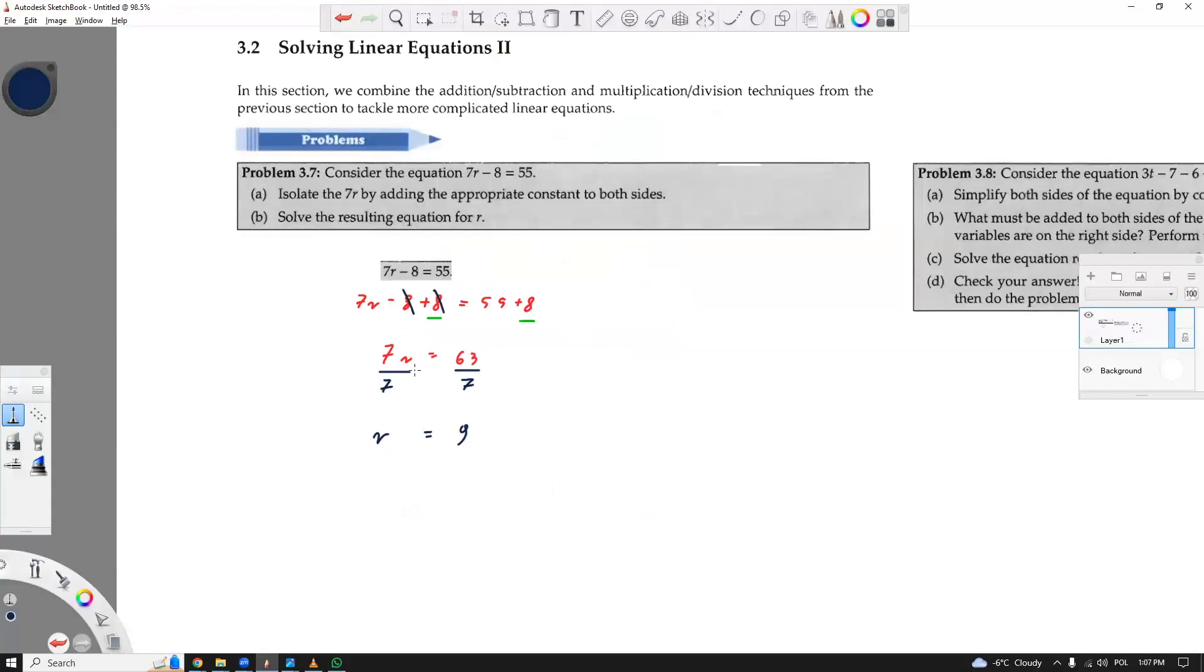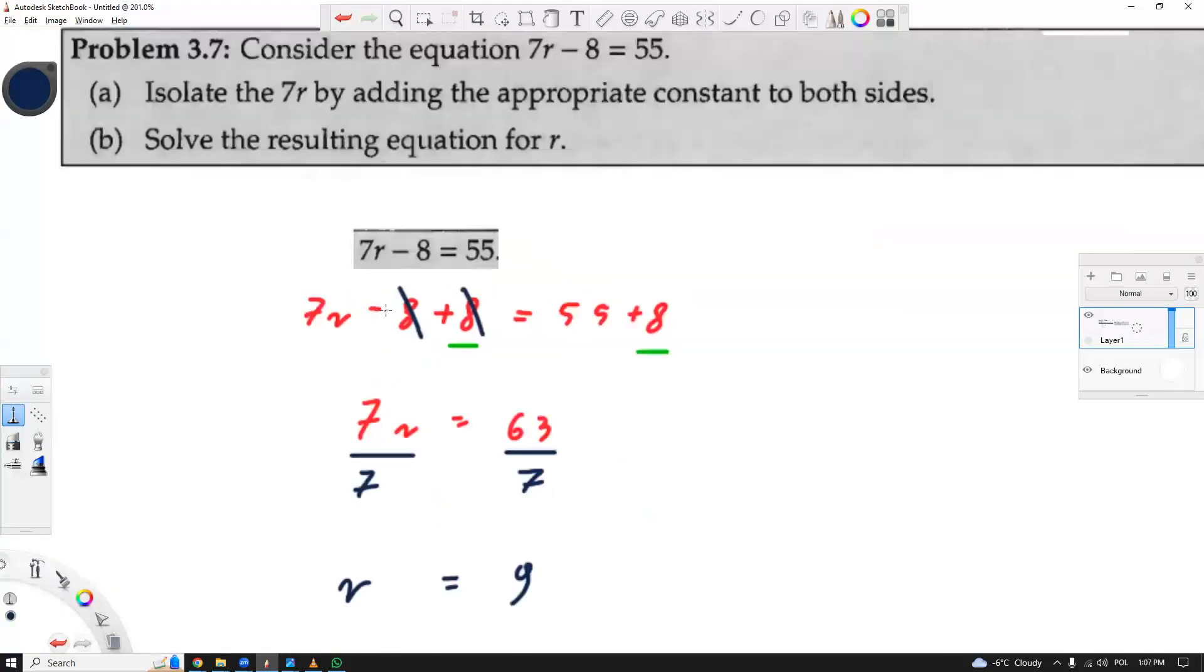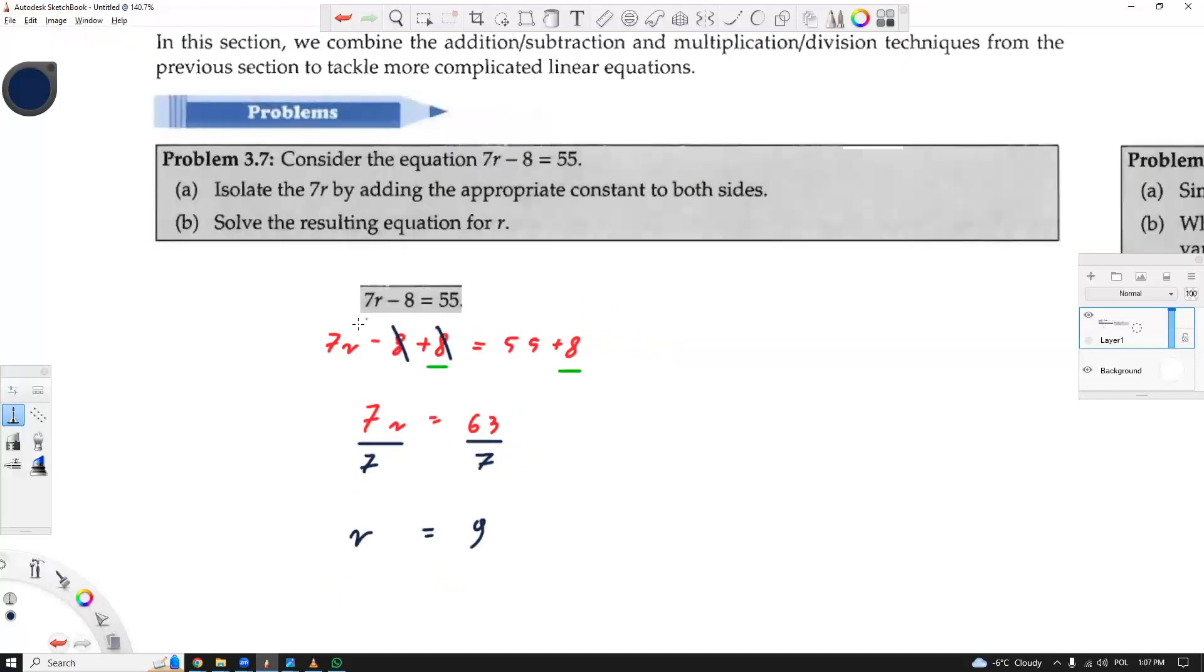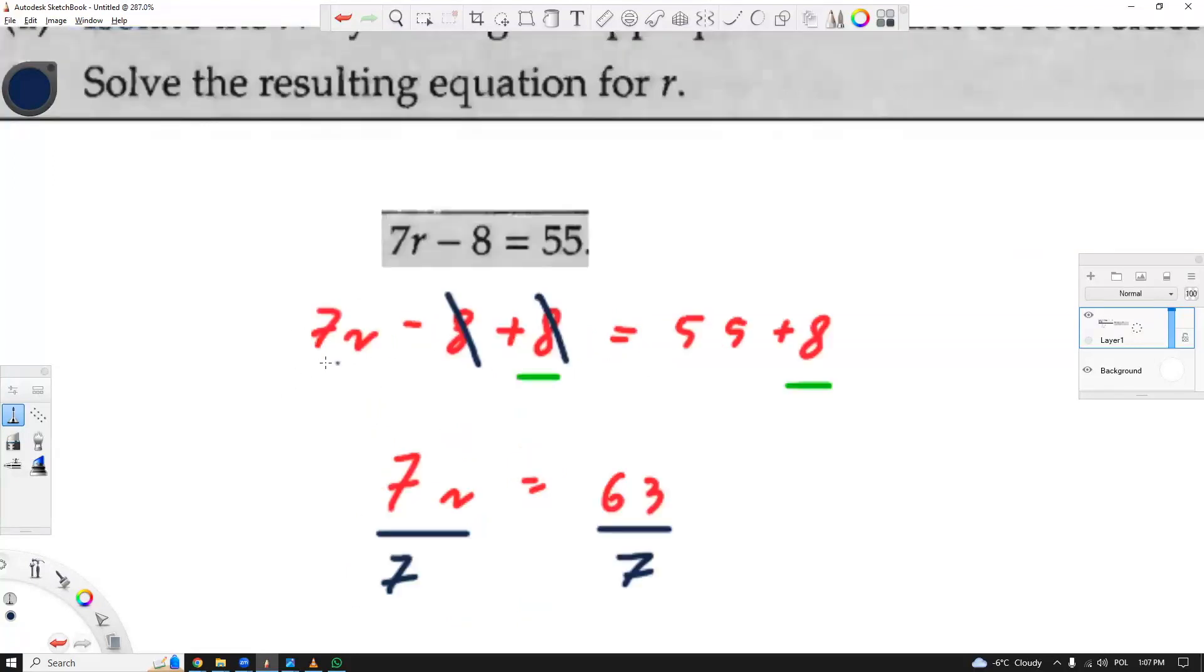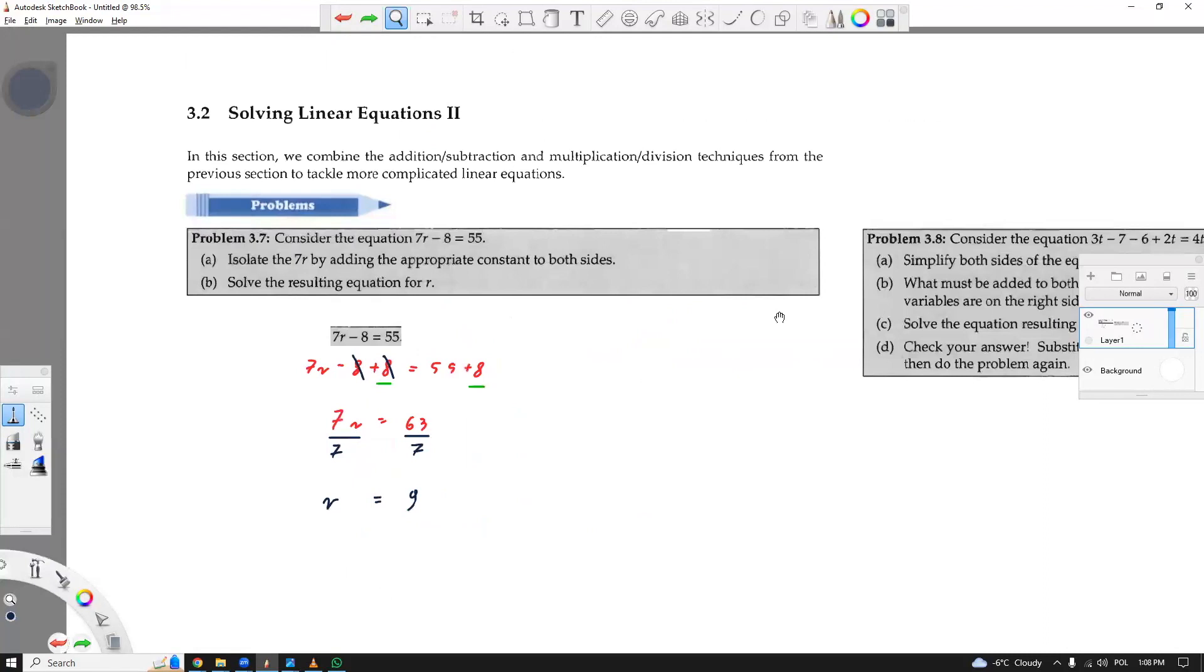Remember, we are always doing the opposite. If we're subtracting, let's add. If we're multiplying, let's divide. Now, it is important to remember the order. You can't just subtract by 7 first when there is still 8. So you need to first isolate the r, and then you can work on the r itself.